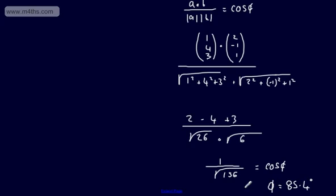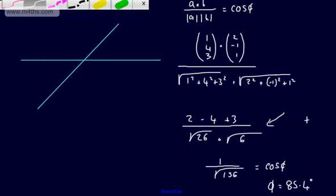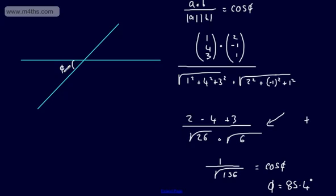Now, if the dot product is positive we have an acute angle; if the dot product is negative we get an obtuse angle. When two vectors form an acute angle theta, the supplement is 180 minus theta. A negative dot product produces an obtuse angle. If you're asked for the acute angle and you get a negative dot product, you simply subtract the result from 180 to find the acute angle.